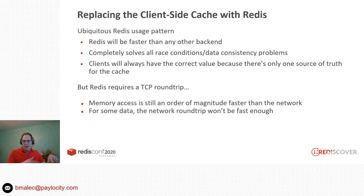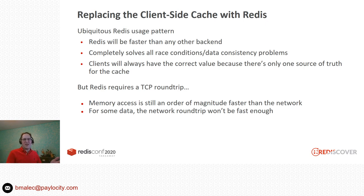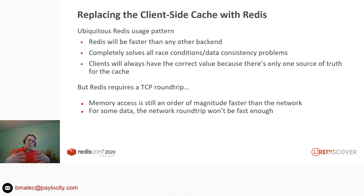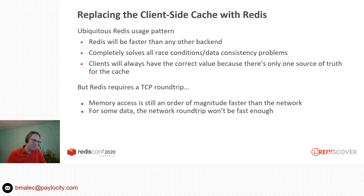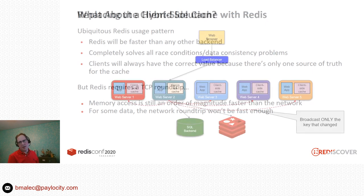There's one little catch: every time you do a Redis access, you're actually doing a TCP round trip — you need to traverse the network to actually get the value from Redis. There are some cases where there's data you just need faster than you can get across the network. Redis is probably sub-millisecond to retrieve data, but if you need to retrieve dozens of values, that starts adding up. Now you've got 20 or 30 milliseconds used basically traversing the network, and RAM is an order of magnitude faster than the network.